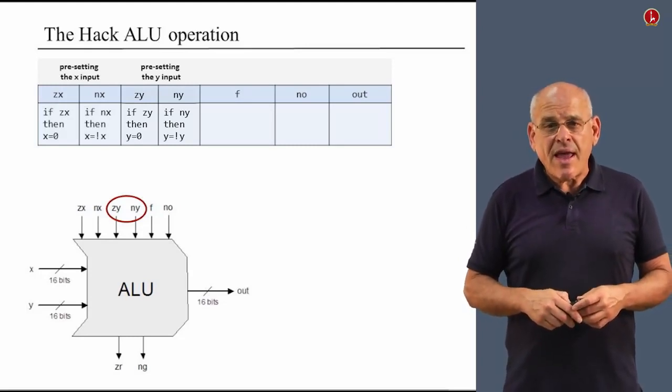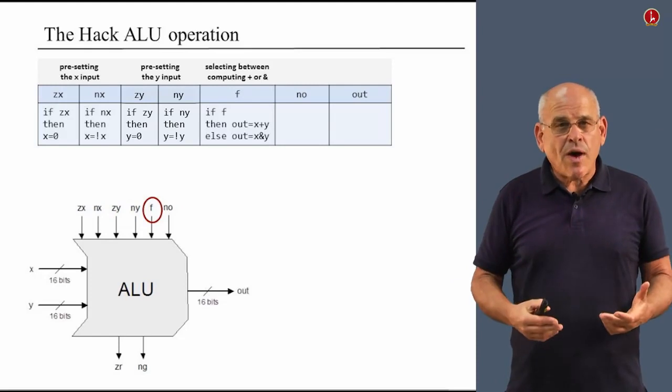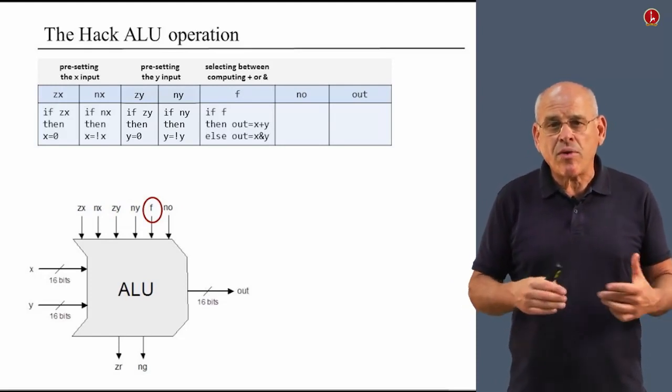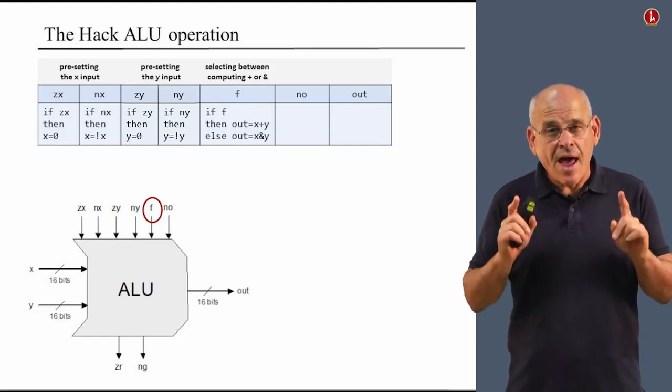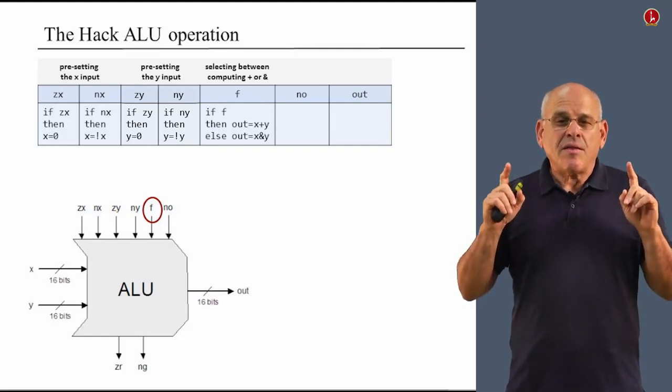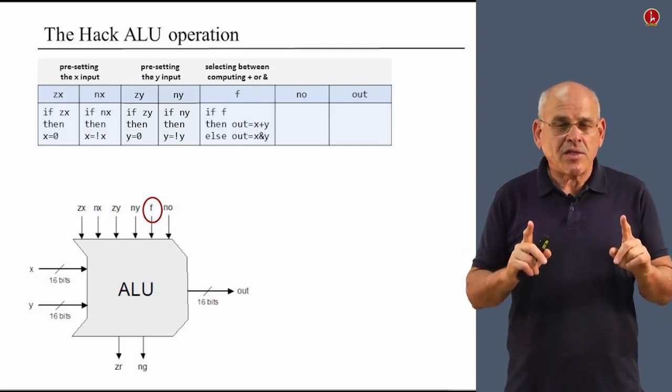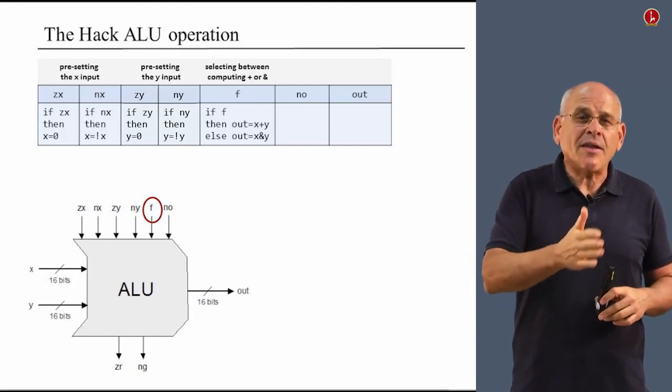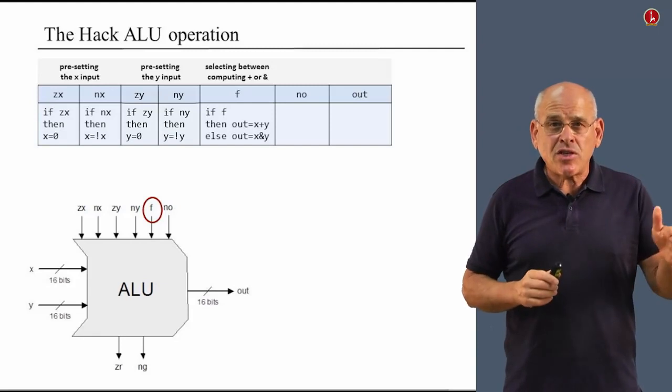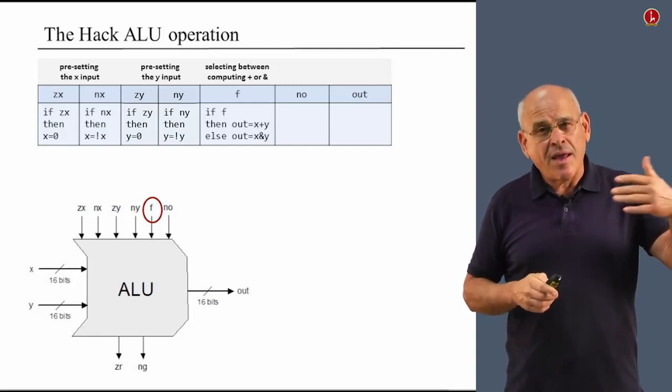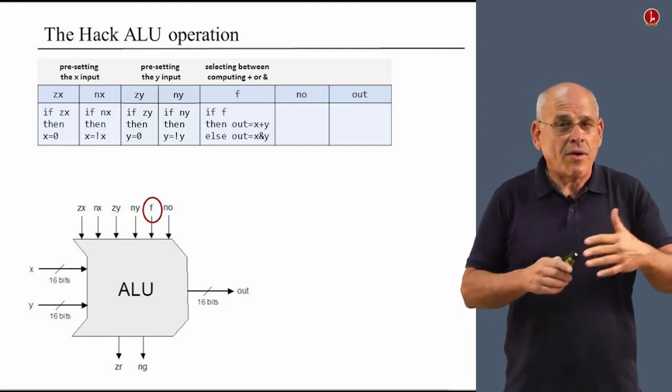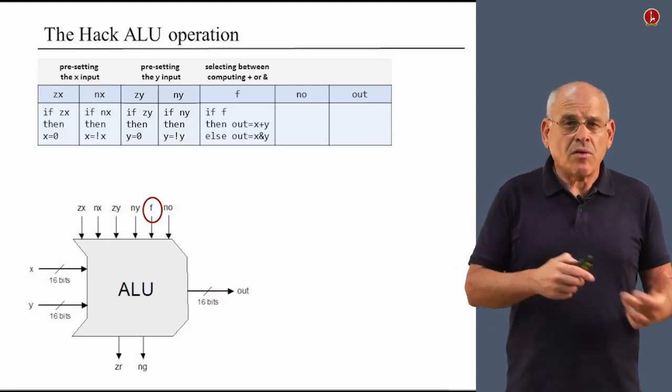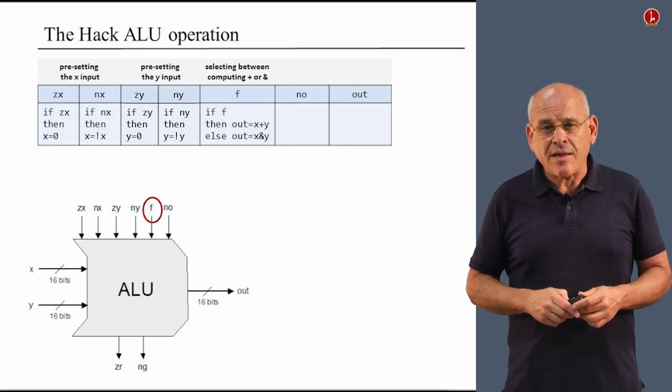The same thing exactly happens with the y input using the zy and ny directives. Then we have an f bit. If f is 1, we compute x plus y. If f is 0, we compute x and y. Now, these are the processed x and y. So before we do these computations, the x and y's have already undergone these manipulations that we talked about before. They became either 0 or negated or nothing, maybe we didn't touch them.